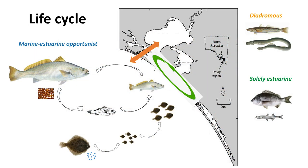Based on their life history, you can divide those fish into different functional groups based on their use of and dependence on the estuary. Typical groups include marine estuarine opportunistic species - mulloway is a typical example: they spawn in the marine system, the juveniles move to the Coorong using it as a nursery ground, then grow out and move back to the marine system. Greenback flounder also has a similar life history.